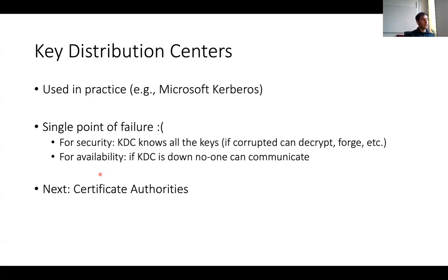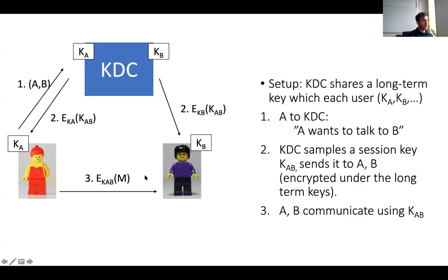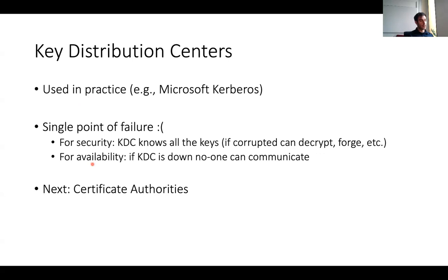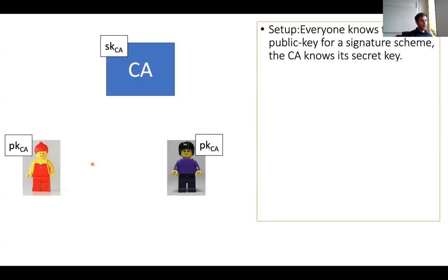Moreover, the KDC is also a single point of failure for availability: if the KDC is down, Alice and Bob cannot talk securely because they have no way to generate the secure key they need. Those are two important drawbacks of KDCs, which motivates why we're going to talk about something else: certificate authorities.